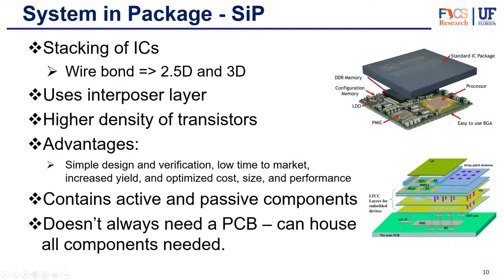System-in-Package has many advantages: a simple design and verification process, low time to market because it's easier to design than SOC, increased yield due to higher simplicity, and optimized cost, size, and performance. These chips contain not only active devices but also passive components like resistors, capacitors, and inductors spread through the substrate. We can think of these as a tiny PCB all inside one single chip — which means that with this multifunctionality, we don't really need a full PCB. Because the ICs are interconnected through the interposer, we no longer need a PCB underneath to solder all those components.